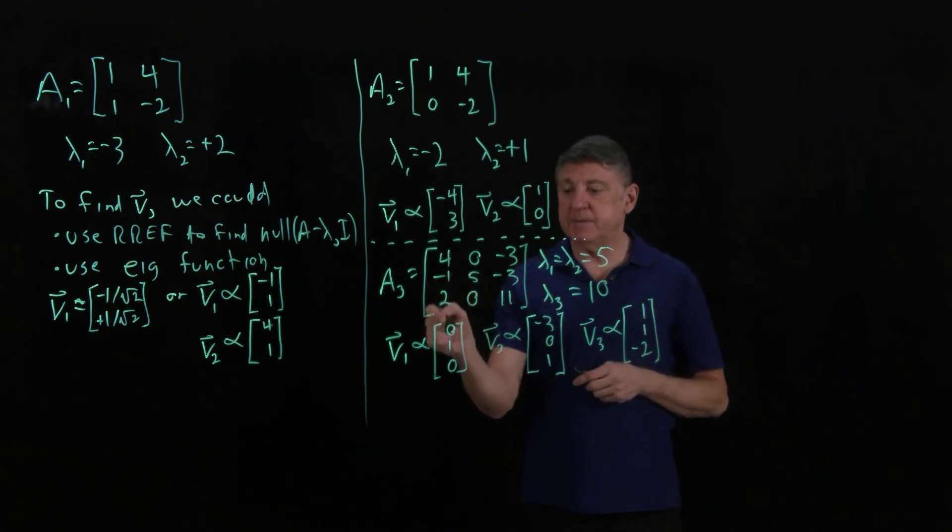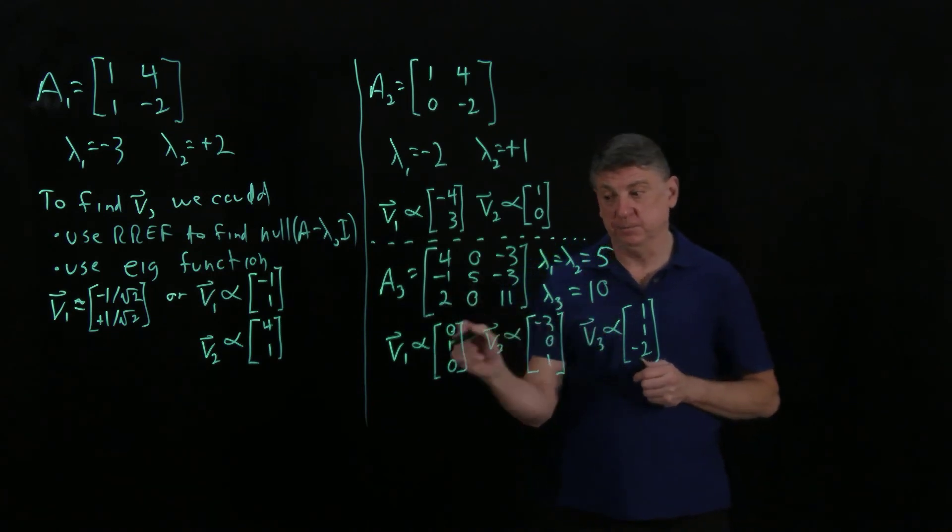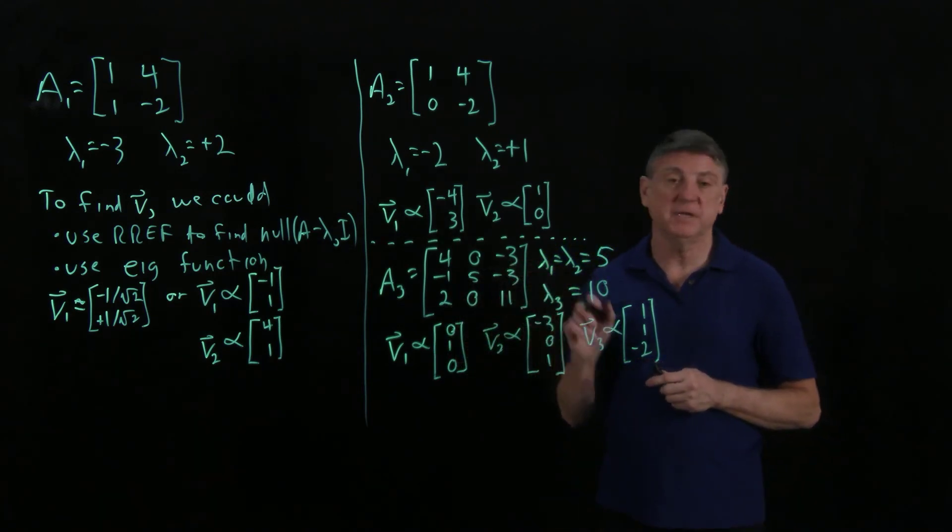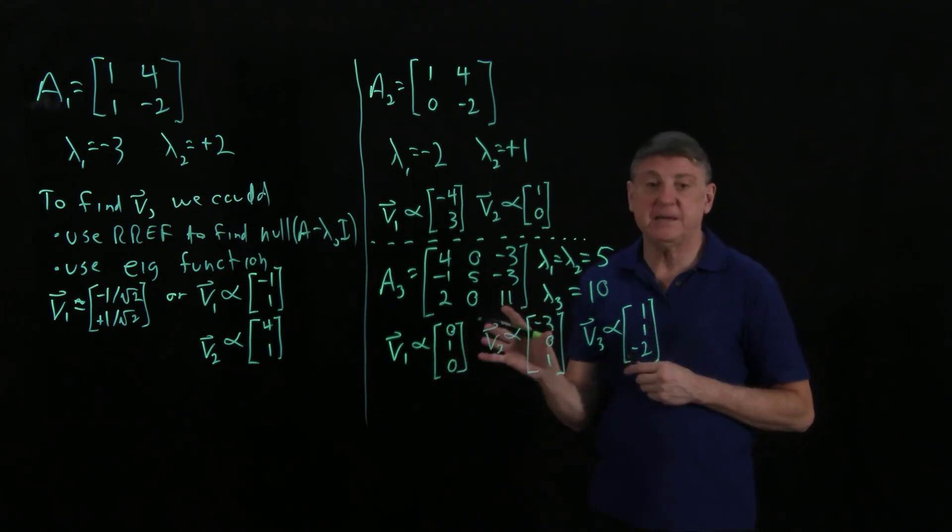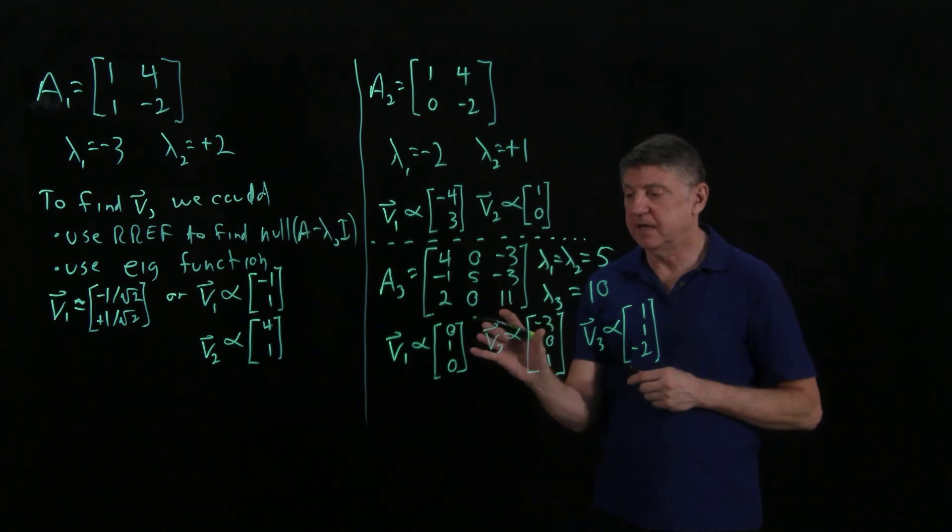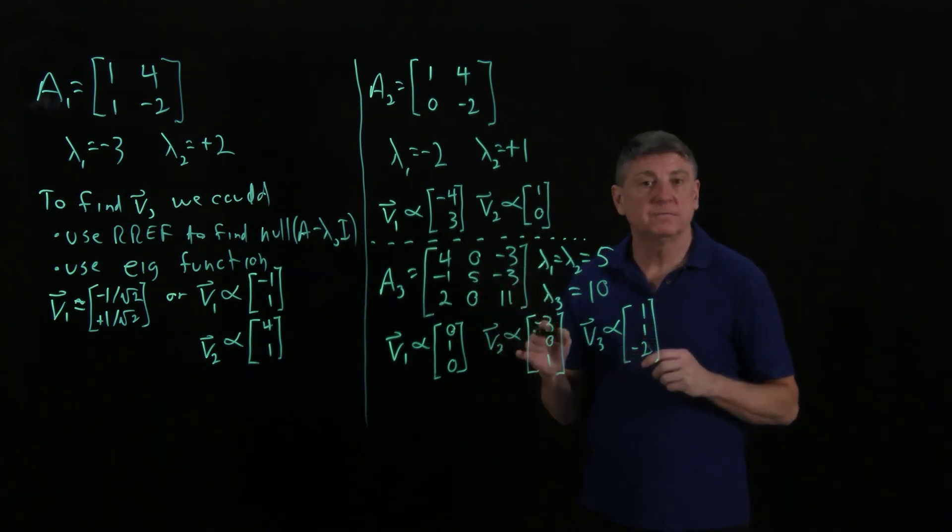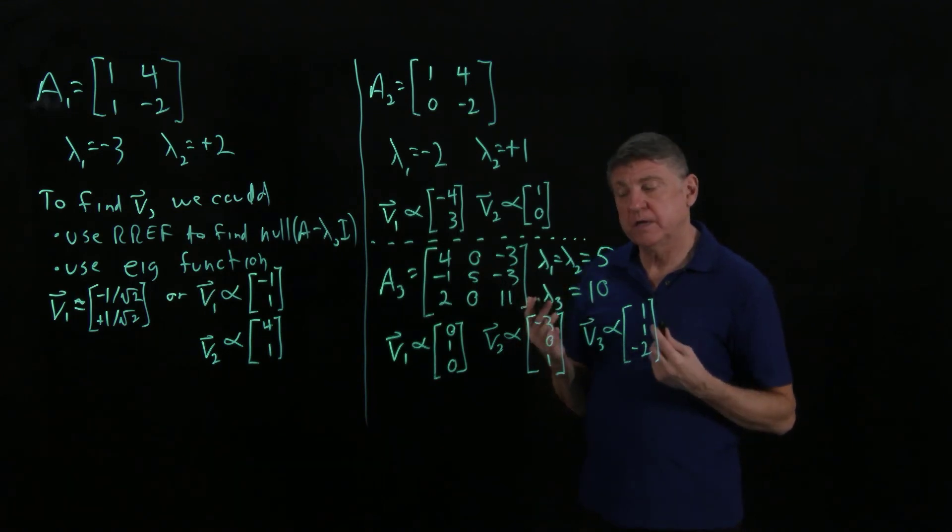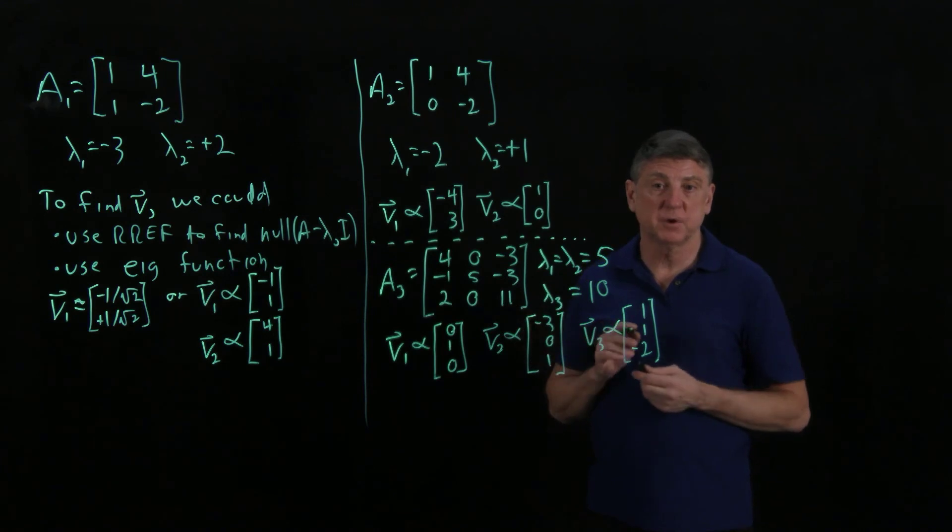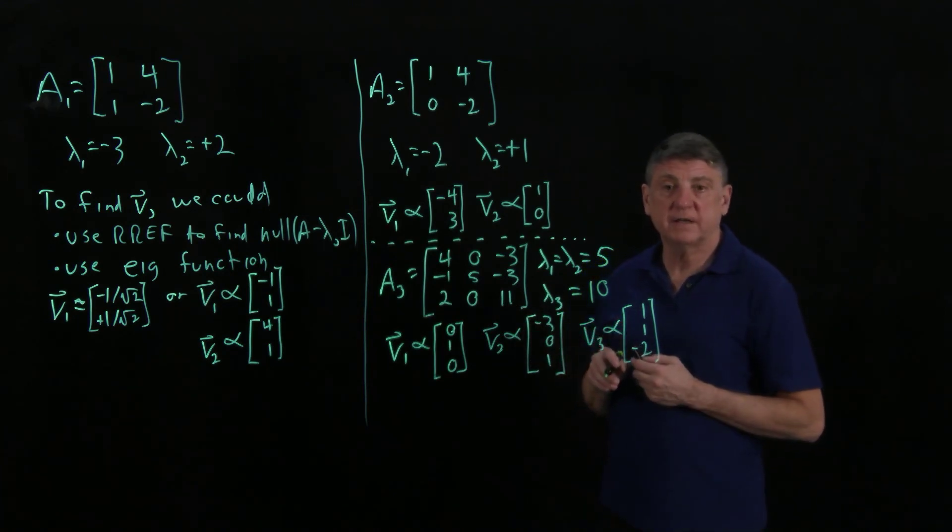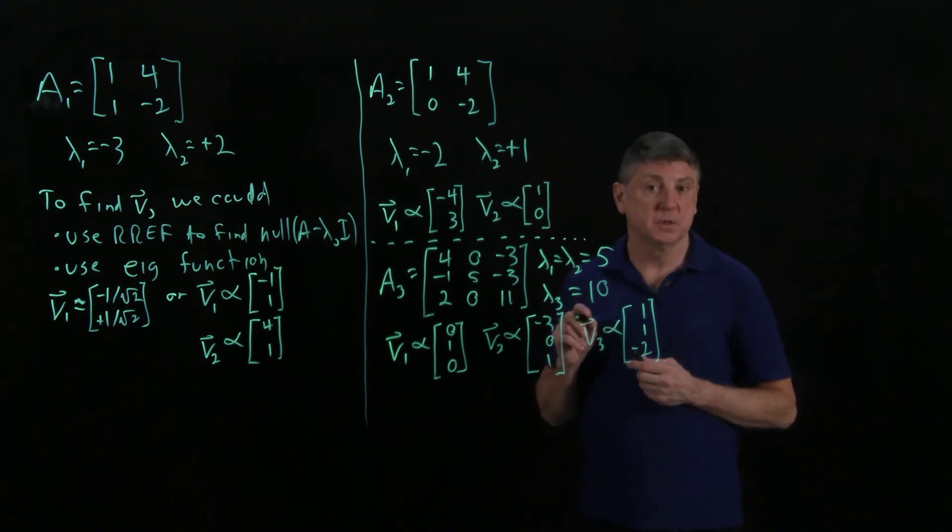If we examine these eigenvectors, we don't see any pattern between the eigenvectors and the matrix. This is saying that these eigenvectors are deeply embedded in this matrix. One of the things that I do when I'm facing a matrix that is relatively small is I like to find out what are the eigenvalues and eigenvectors. Because when I know that, it tells me a lot about the matrix.